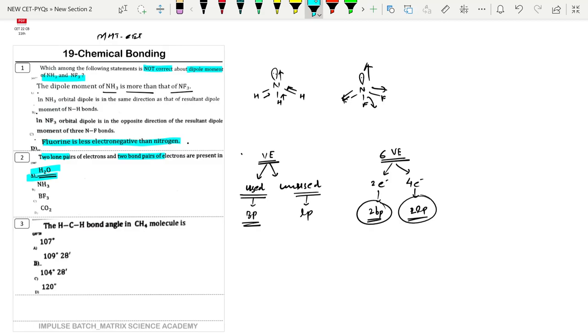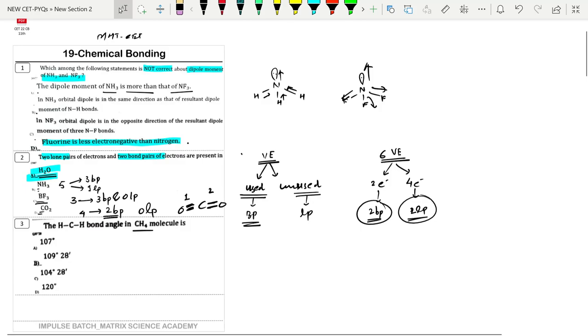But even if you check nitrogen, it has five electrons. We use two electrons for bonding, so we have two bond pairs and two lone pairs. This is one pair and another pair.